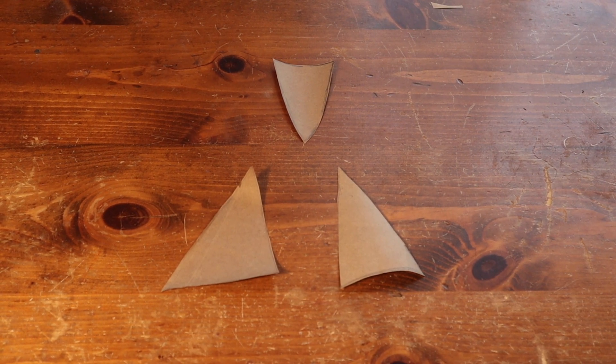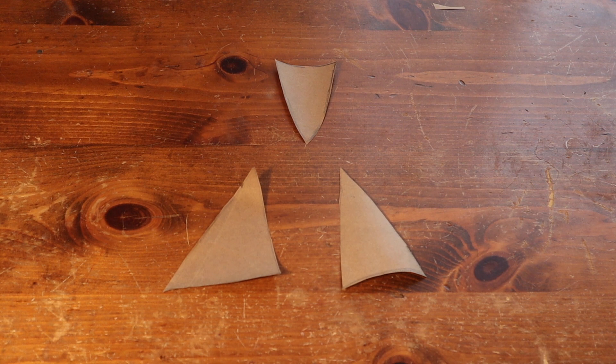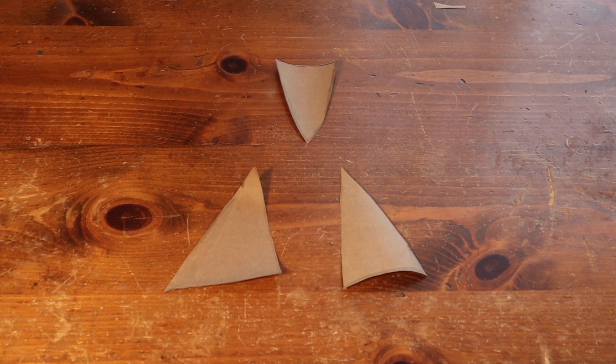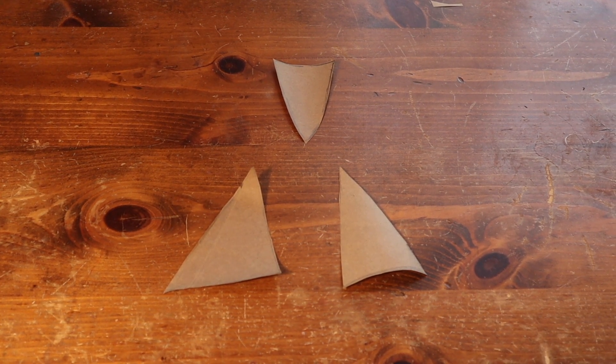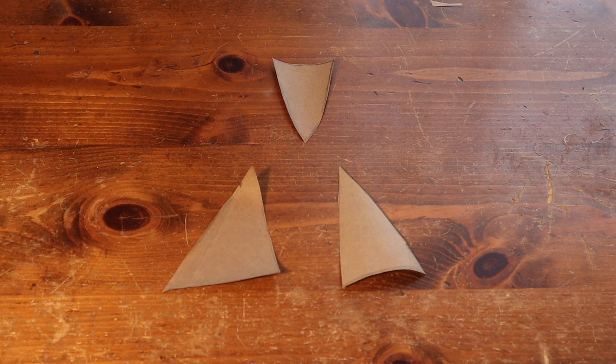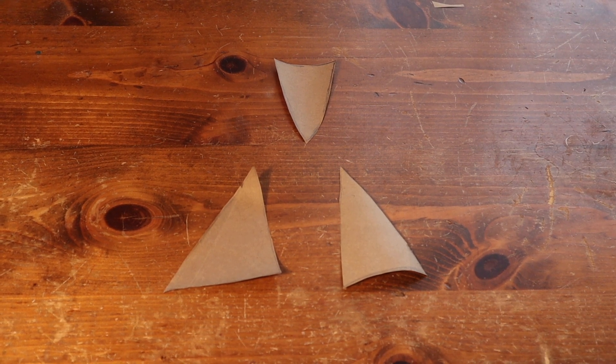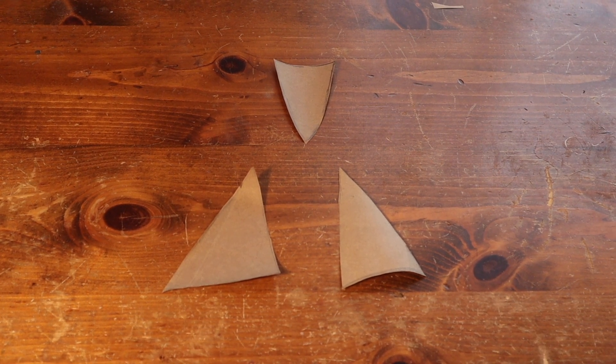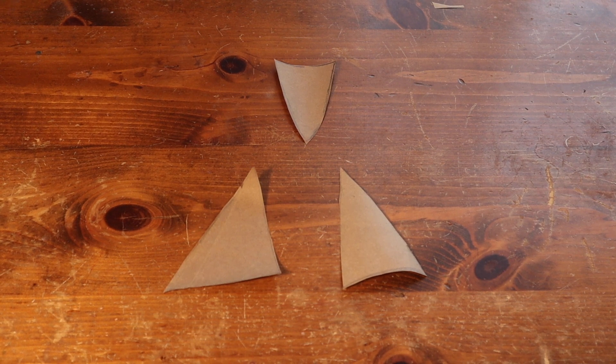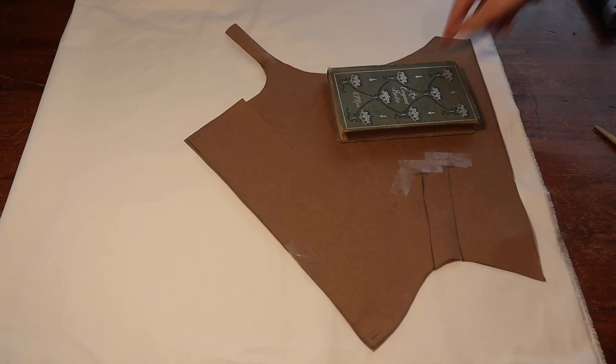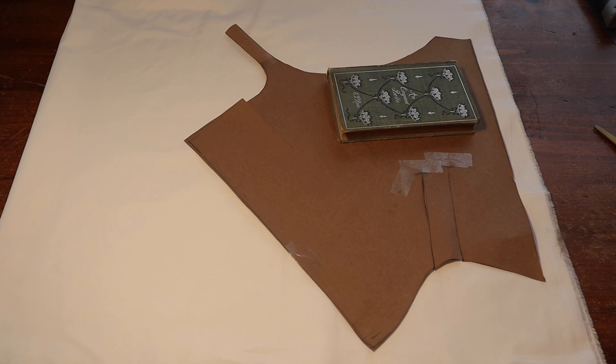The bust and hip gussets as drafted in the pattern weren't the right shape for me. Mostly they just weren't big enough. This is probably because I'm on the hourglass side. So I just created new bust and hip gussets when I did my mock-up so that I would get them exactly the right size. I can now cut out the pieces for my stays.